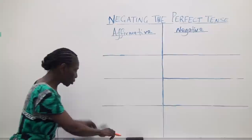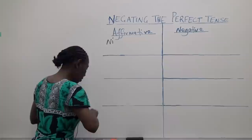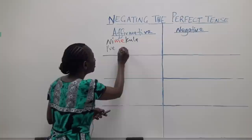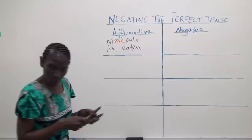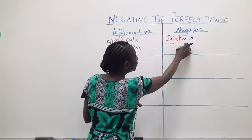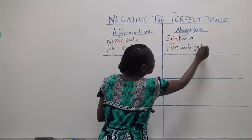Our first sentence: Nimekula — 'I have eaten.' In negating this, we say: Sijakula — 'I have not yet eaten.'